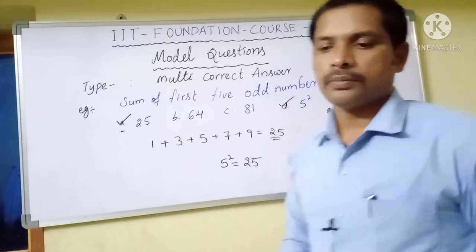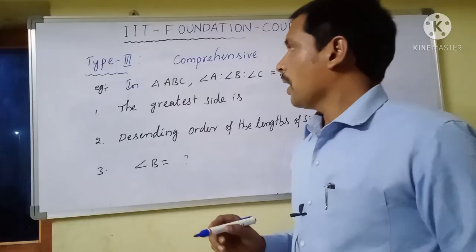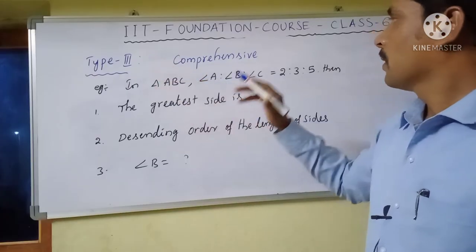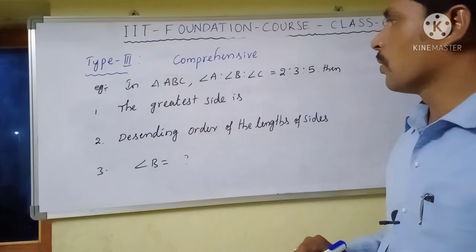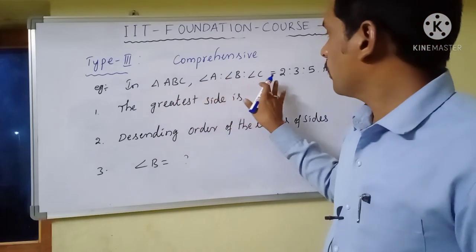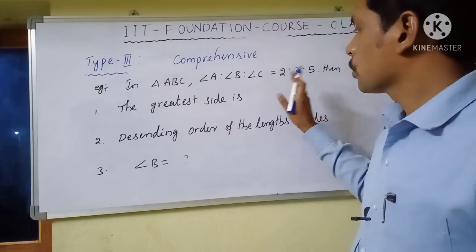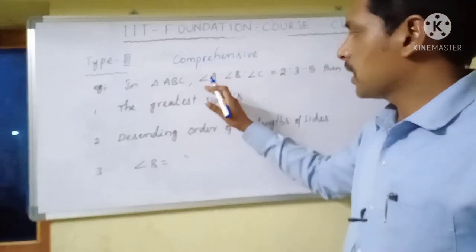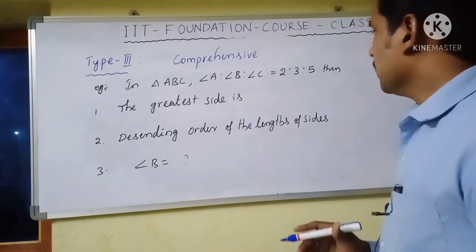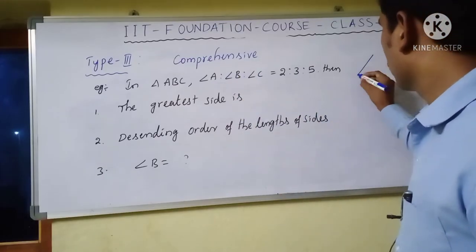Now we will discuss the third type: Comprehensive model. In this model, they will give some information, and based on that information we should find the answers to the given questions. Here, they have given one triangle ABC.